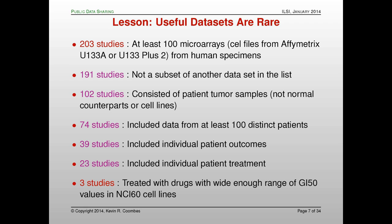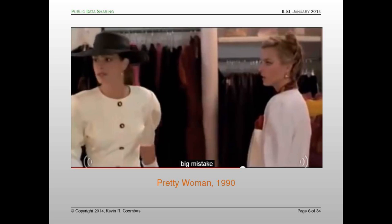Because we were looking at drug response, we also had to have data for those drugs on cell lines with a wide enough range of values to use. It turned out that this paper in JNCI, starting with every data set in GEO and ArrayExpress, is actually about three studies that met all our criteria. So the first warning is that even if people are sharing the data, finding useful data may be hard.